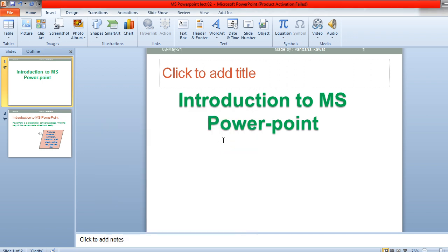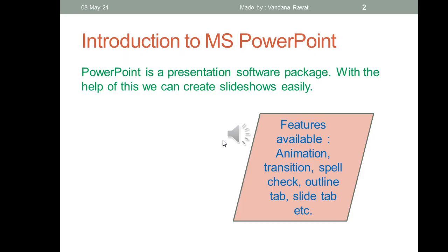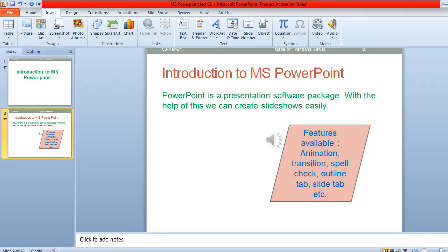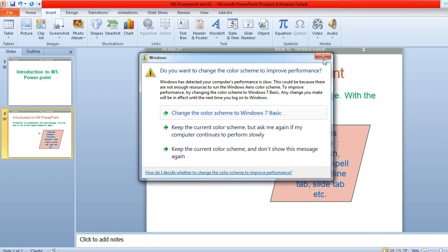All the selected options will be applied to your PowerPoint presentation. Save it by pressing Ctrl+S, then start your slideshow with the F5 function key. You will see the header showing the date and the slide number at the bottom of each slide. These are the things you can do in your PowerPoint presentation slideshow.